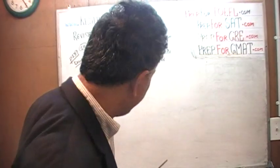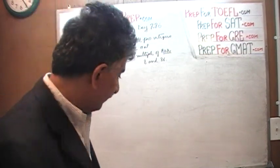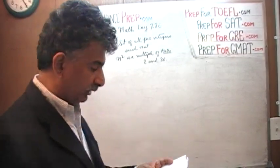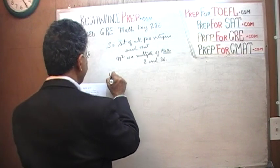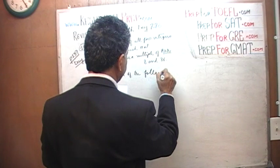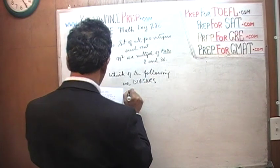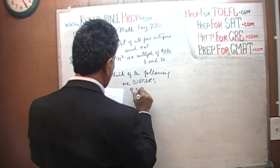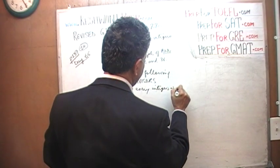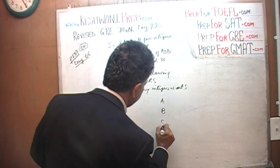That's the first part we need to understand. Once we have figured out what numbers belong to this set, we have to answer the question: which of the following are divisors of every integer in set S? The answer choices are A, B, C, and D.